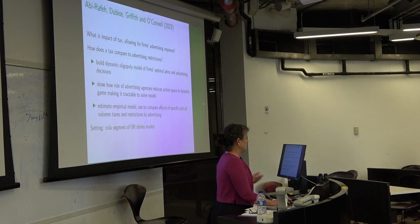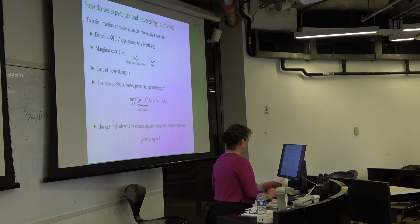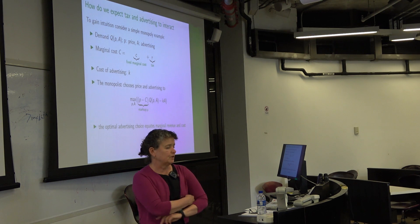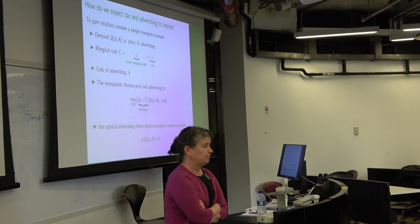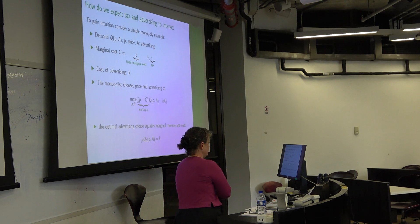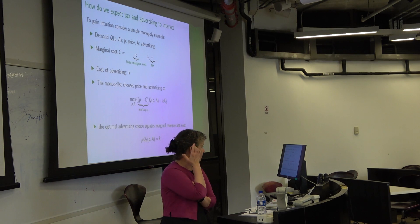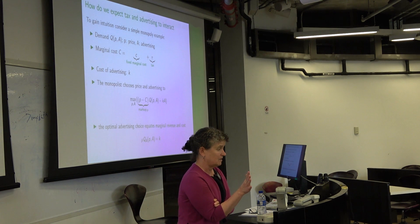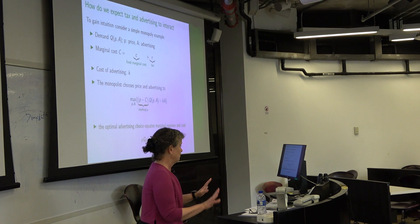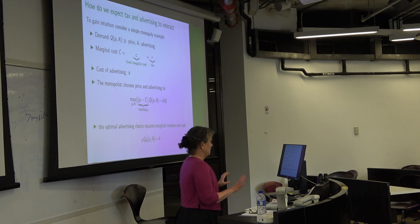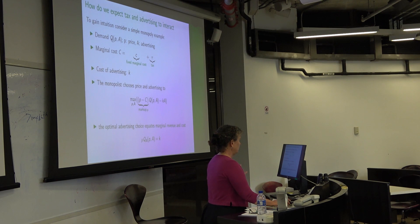We're going to look at the cola segment of the UK drinks market — basically Coke and Pepsi plus some own-brand cola products. Before diving into the full model, I want to write down a really simple model to build intuition, because the full model gets very complicated very quickly with multiple dimensions. It's useful to start with a simpler model to identify the main factors at play. So to gain some intuition, let's look at a simple monopoly example — not what I'll estimate, but a useful benchmark.